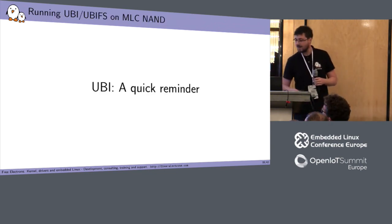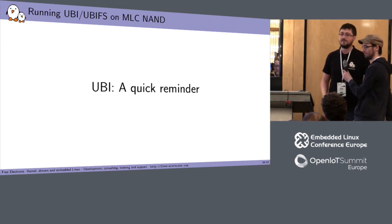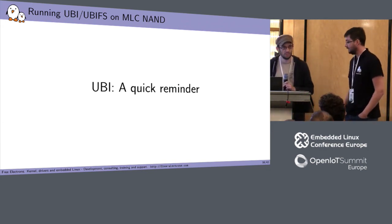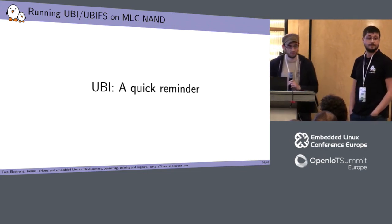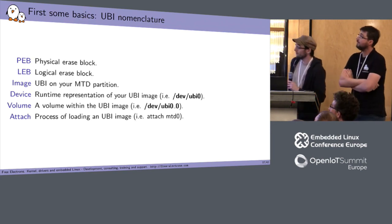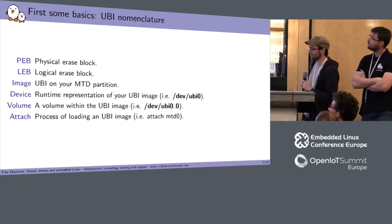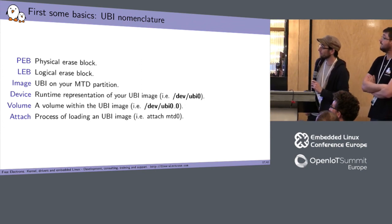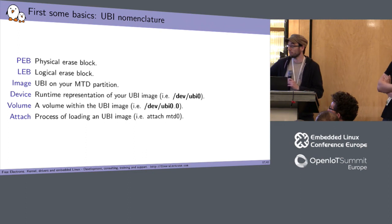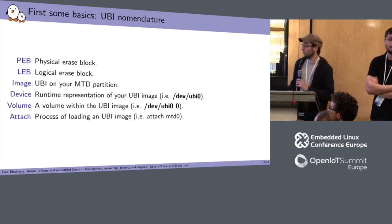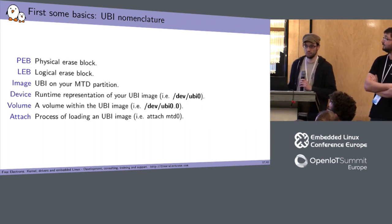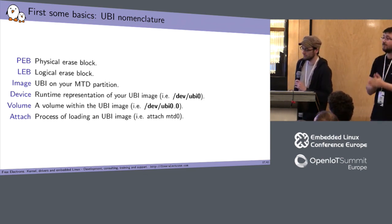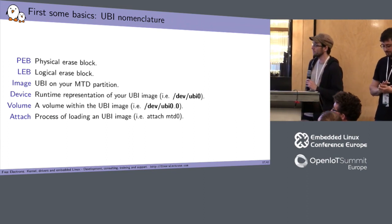Now Richard will talk about UBI basics, since we'll dive into details and need to ensure everyone knows the fundamentals. First, UBI nomenclature: UBI is a mapping between logical and physical erase blocks. All blocks UBI presents to the user are logical blocks mapped to real physical blocks. We use PEB for physical erase block and LEB for logical erase block.